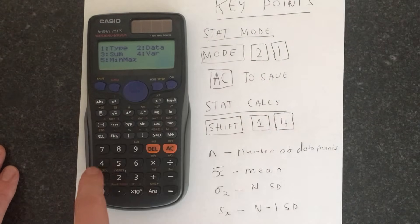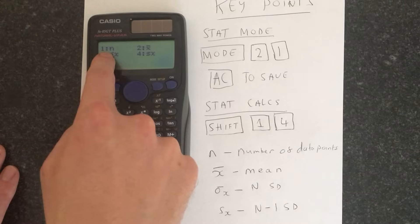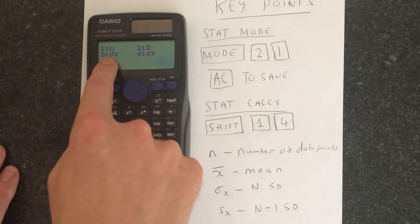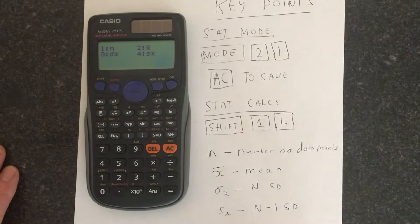We want to do the VAR which gives us this menu here. You've got N which is your number of data points. You can get the mean, you can get the population and the sample standard deviation.